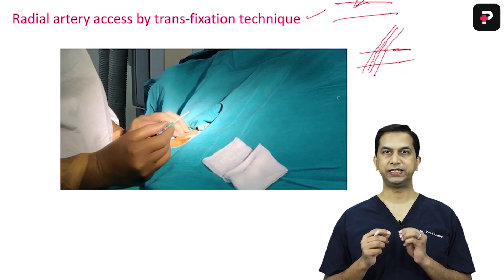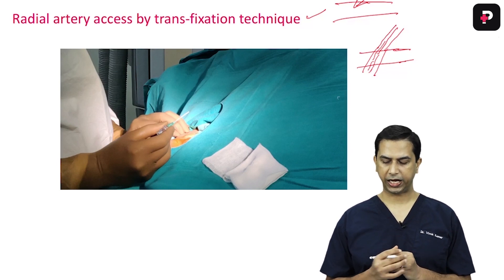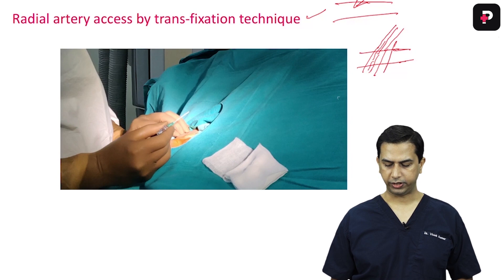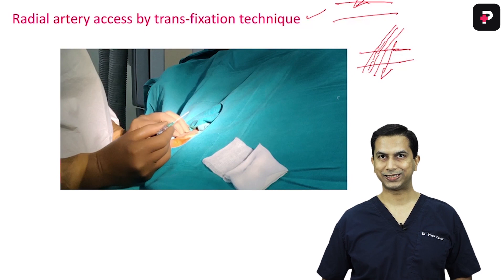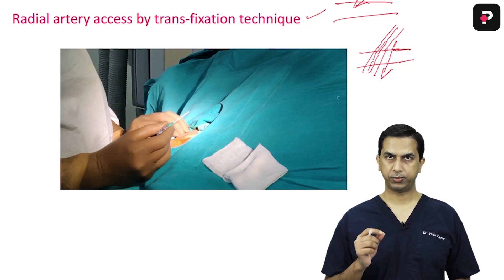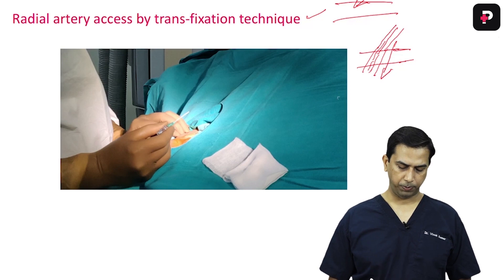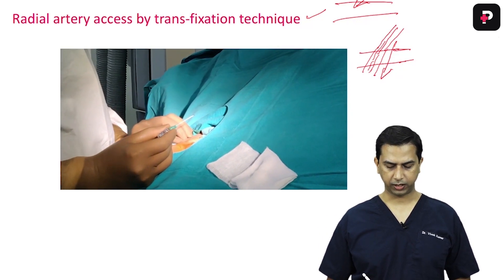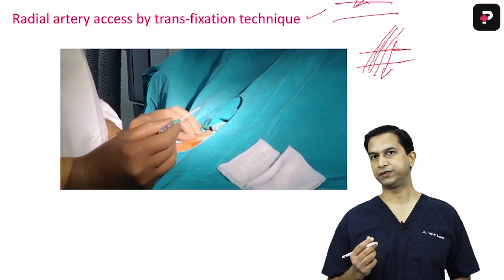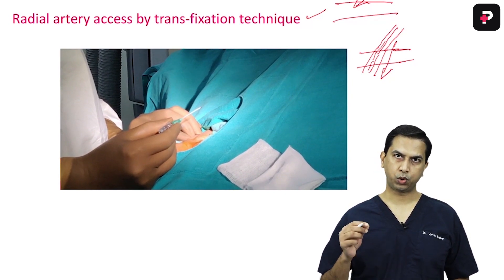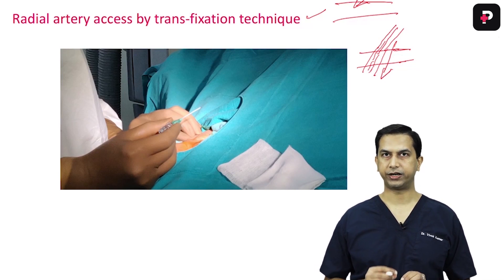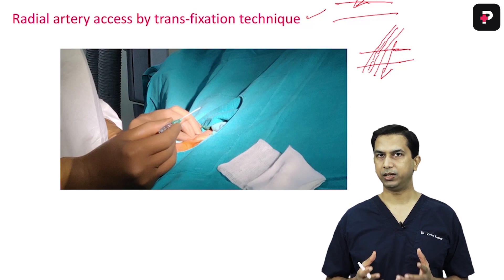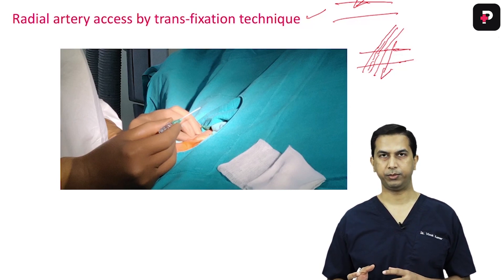You go with this needle and the plastic sheath covering it, puncture the artery, go deep, and also puncture the posterior wall. You can assess that you have punctured the artery when blood comes at the hub of the puncture needle, confirming you have punctured the anterior wall. Then you go deep to puncture the posterior wall, fixing the artery — because the caliber of the radial artery is hardly 2.5 mm, making it very thin relative to the femoral artery.